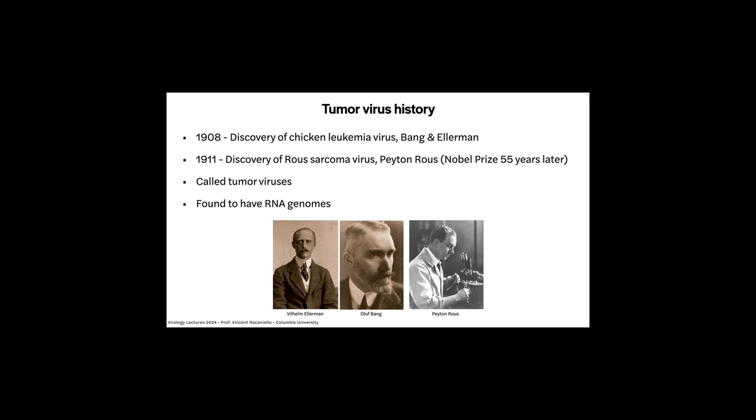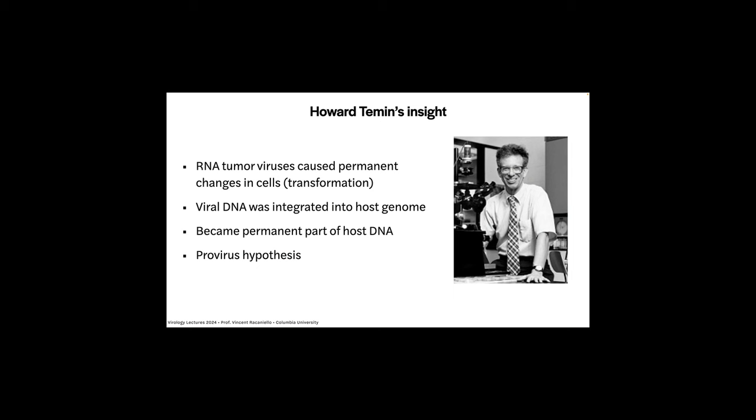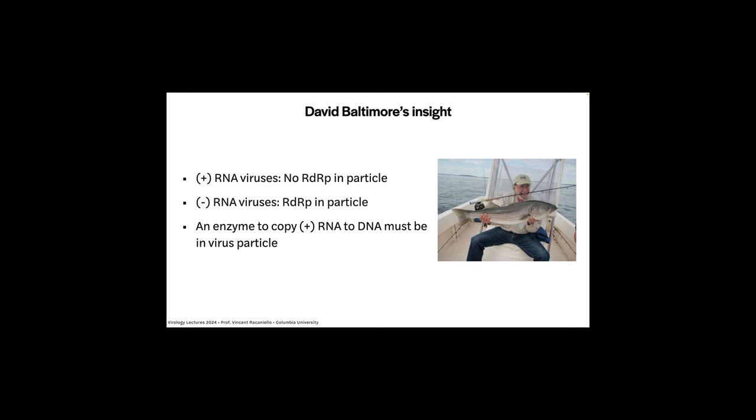These were eventually called tumor viruses because when you inject them into animals, they cause tumors. They were found to have RNA genomes, so they are RNA tumor viruses. Howard Temin was working on this in the late 1950s. He made the logic that when you infect cells in culture with these RNA tumor viruses, they get morphology changes — they get transformed permanently. And he said that somehow this RNA virus must be making a DNA copy that gets integrated into the cell genome. He called this the provirus hypothesis.